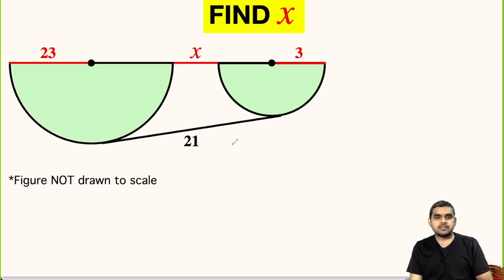Welcome to my YouTube channel. Today I am back with another interesting question. In this question we have two semicircles. The bigger one has a radius of 23 units and the smaller one has a radius of 3 units.